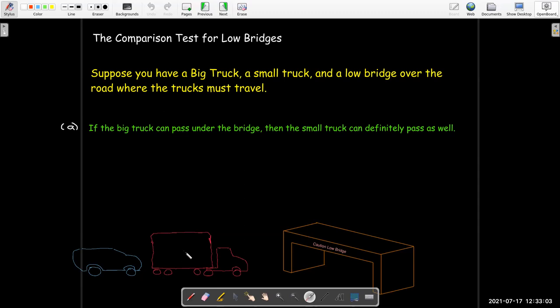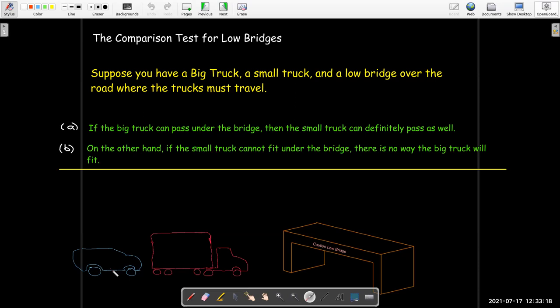So if the terms of one series are larger than the terms of another series, if the larger series is convergent, we'll know the smaller series is convergent as well. And on the other hand, if the small truck cannot fit under the bridge, there's no way the big truck will fit.